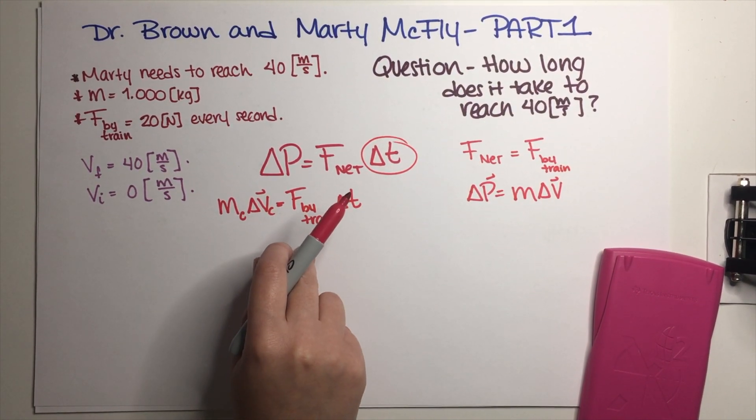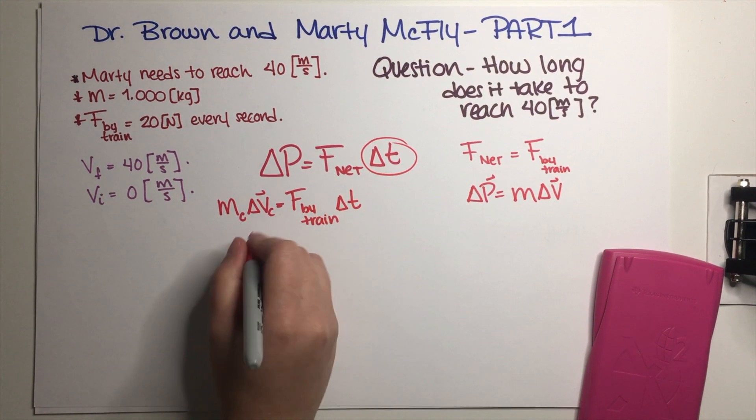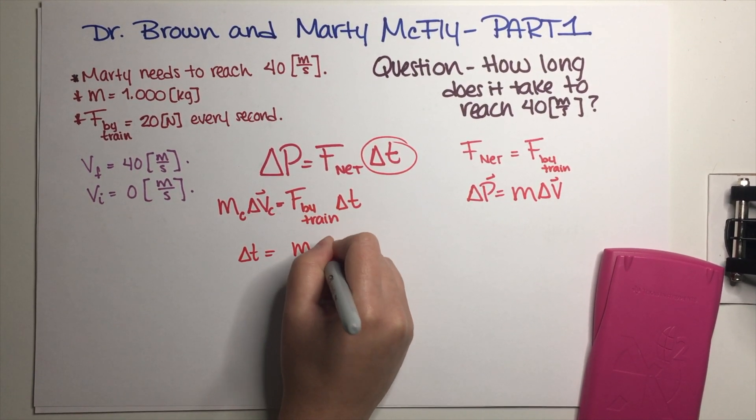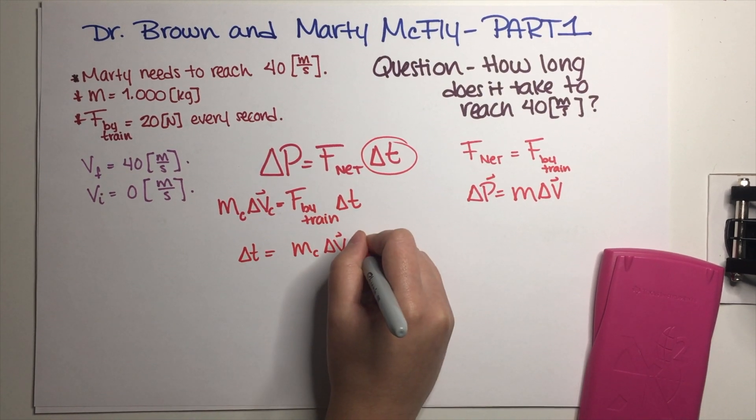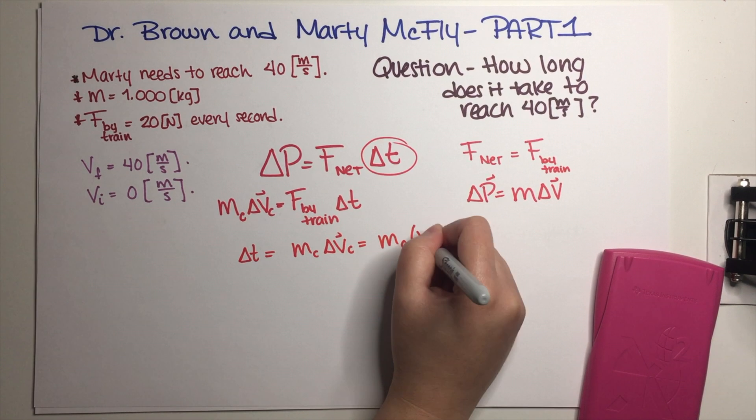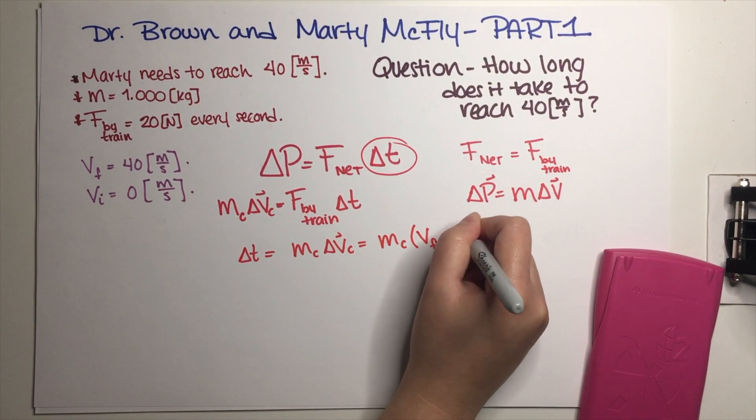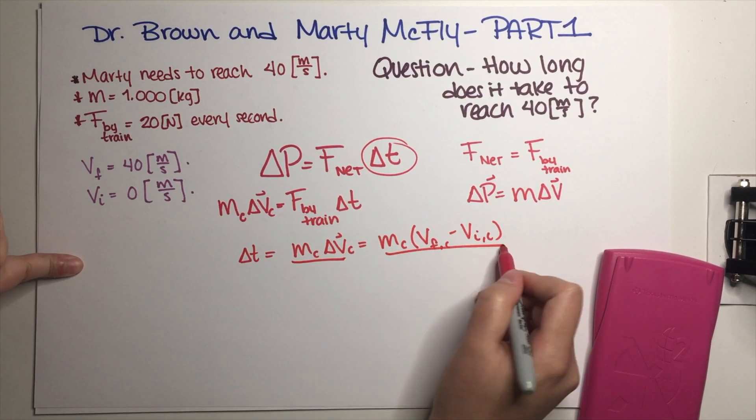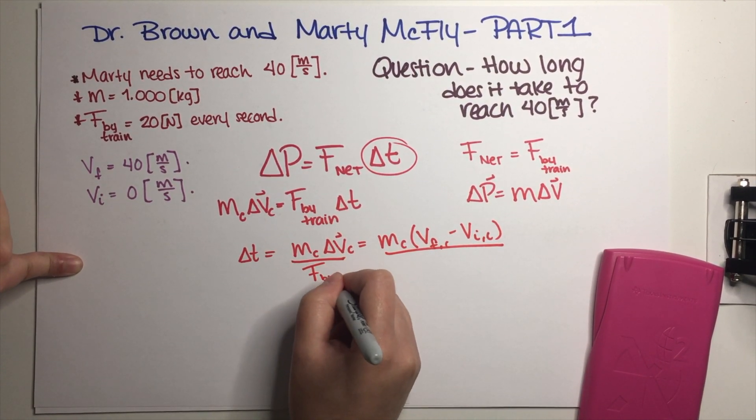I'm just going to go ahead and solve for Δt, so Δt is just going to be equal to mass of the car times Δv of the car, which is equal to m_c times (v_final_car minus v_initial_car), and of course I need to divide by force by train.